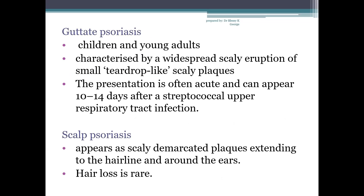Next is guttate psoriasis, most commonly seen in children and young adults. It is characterized by a widespread scaly eruption of small teardrop-like scaly plaques. The presentation is often acute and can appear 10 to 14 days after a streptococcal upper respiratory tract infection. Topical treatments or UVB phototherapy — type B ultraviolet light — are usually effective.